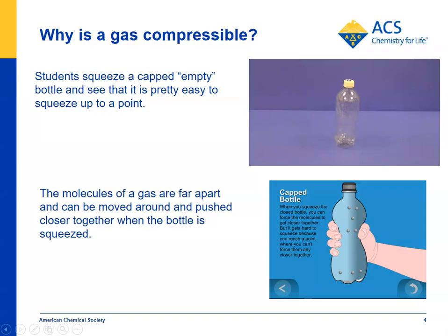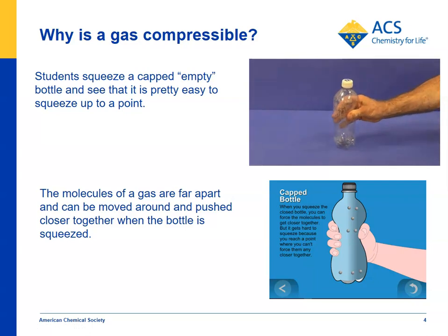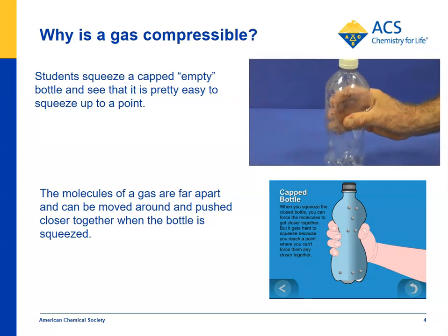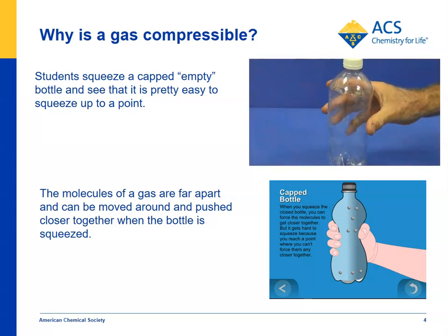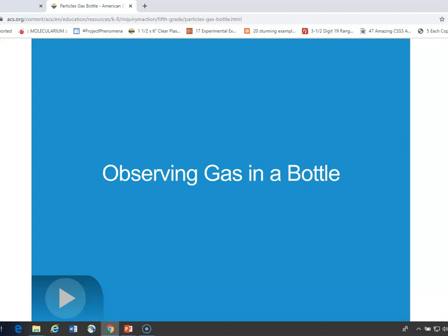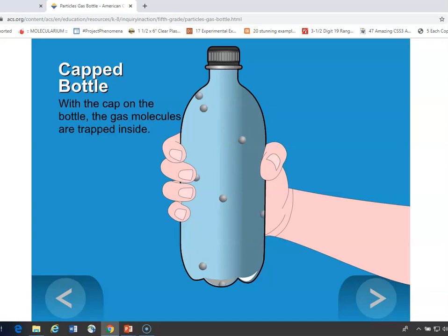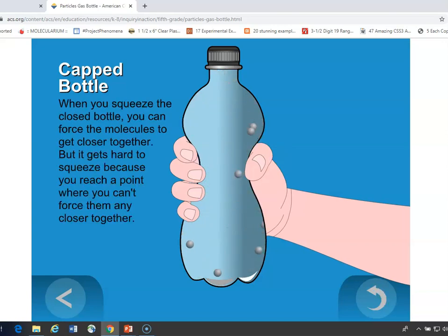Next, students look at another empty bottle, but in this case with a cap on. Students squeeze the bottle and see if it's possible to move those particles of a gas closer to each other — and it is. You can make the argument that when you squeeze the bottle, you're squeezing the particles of the gas near each other; they are compressible. An animation shows the particles of gas with a cap on the bottle being squeezed, so the particles of a gas are far enough apart that they can be squeezed closer together.